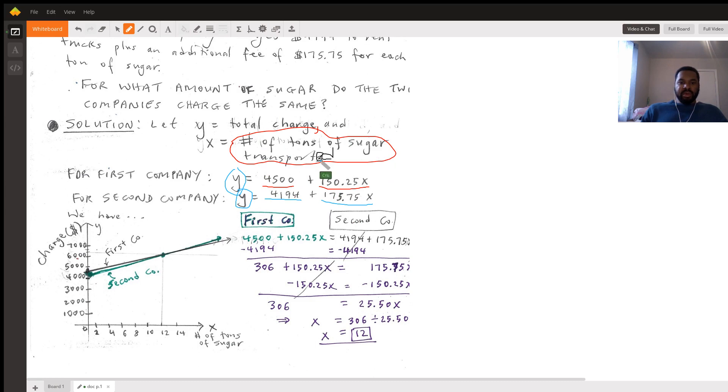If we proceed and do that, we would solve: 4500 + 150.25x = 4194 + 175.75x. Let me write the x's in here. This is really a system - we're setting two equations equal to each other. What you find out is that x would be 12.